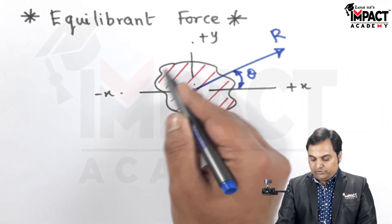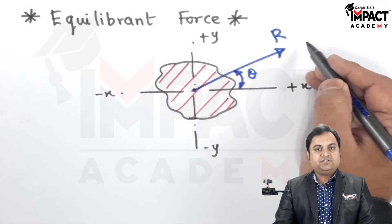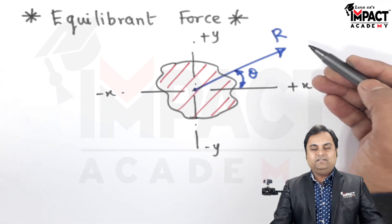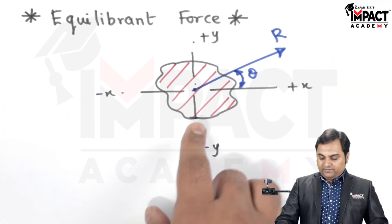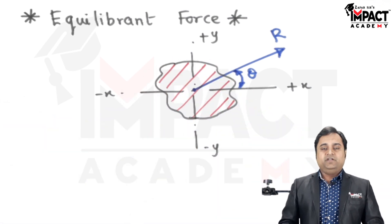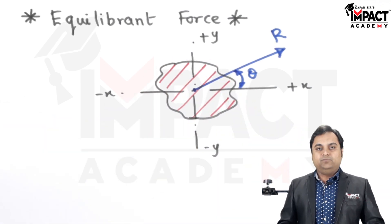So due to this resultant the body would try to move in its direction and it is going away from the equilibrium condition. Equilibrium condition means that if the body is at rest it should remain at rest. If it is in motion it should remain in motion.